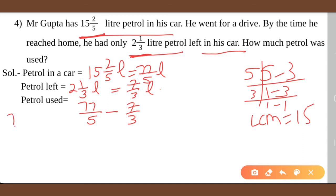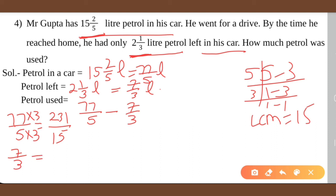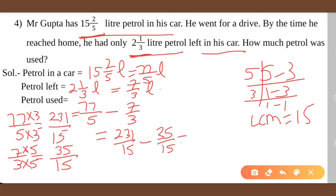We convert 77 upon 5 to denominator 15 — 5 times 3 is 15, so 77 times 3 gives 231 upon 15. Similarly, 7 upon 3 becomes 35 upon 15. Now we have like fractions: 231 upon 15 minus 35 upon 15 gives 196 upon 15. When you divide it, you can change the number to mixed form: 13 and 1 by 15 liters of petrol was used.